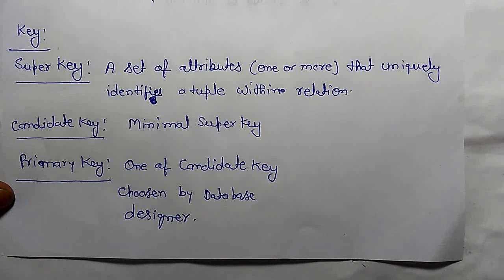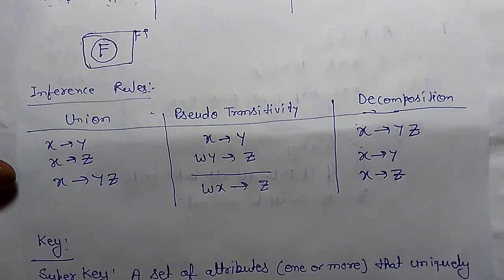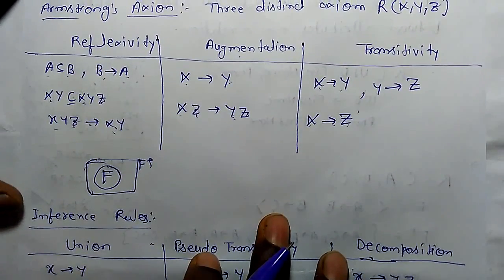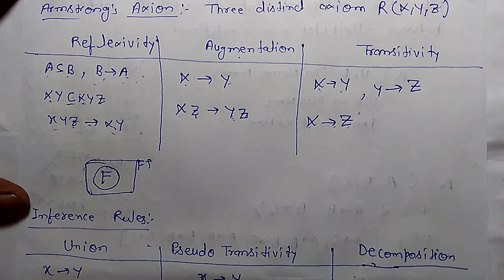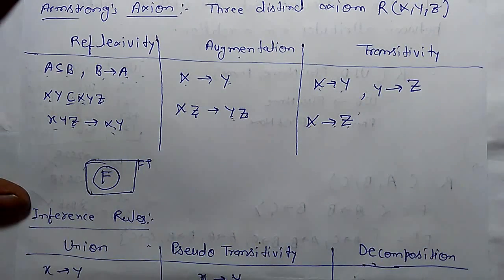Today we are going to learn how we can find a key through the closure property and functional dependency. In the last class we studied Armstrong's axioms and using these axioms we can find the closure of a particular attribute.